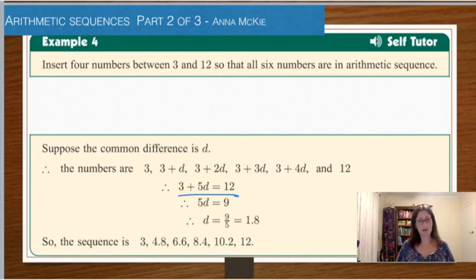We'll set that out neatly. So here we are. Three plus five d is equal to twelve. Therefore the difference comes out to be nine divided by five or 1.8. And if we're interested, that means here are all the different terms. So adding on 1.8 each time. Or you could substitute into each term and work it out that way.